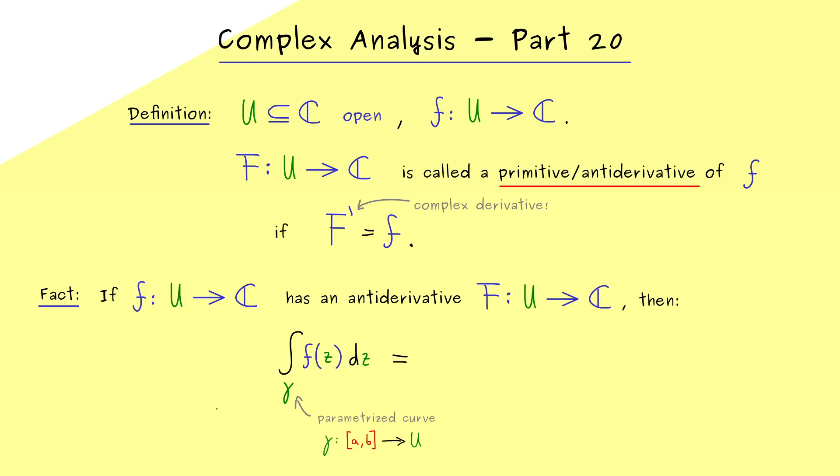For this maybe let's quickly visualize the curve gamma in the complex plane. There we can say we have a starting point gamma of a and an end point gamma of b. Of course the curve could do a lot of things in between but it starts at one point and it ends at one point that's for sure.